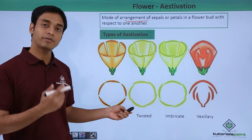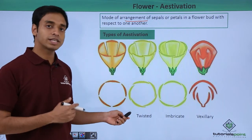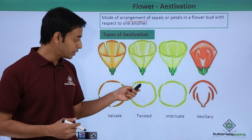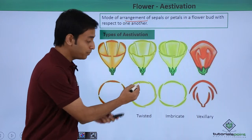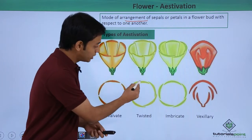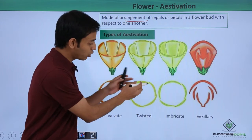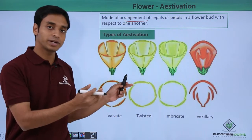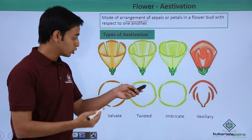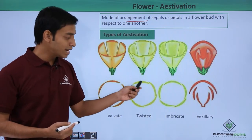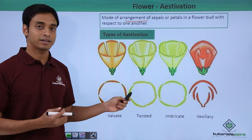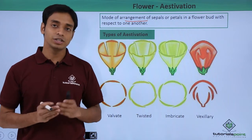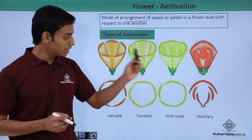The next type of aestivation is known as the twisted type. Here each single petal or sepal overlaps with the adjacent one. One end of a petal goes inside the adjacent petal, while the starting point of that adjacent petal is over the previous one. All petals overlap in a definite pattern.